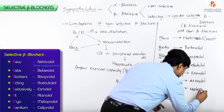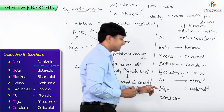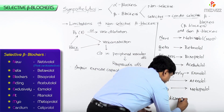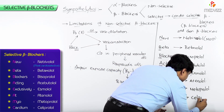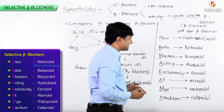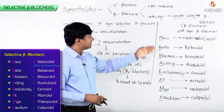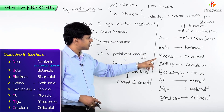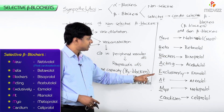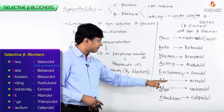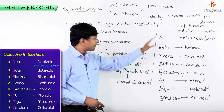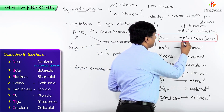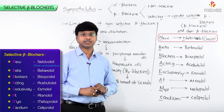Then C stands for Celiprolol. So these are your cardioselective beta blockers: N is Nebivolol, B is Betaxolol, B is Bisoprolol, A is Acebutolol, E is Esmolol, A is Atenolol, M is Metoprolol, C is Celiprolol. Among all these, the most cardioselective beta blocker is Nebivolol.